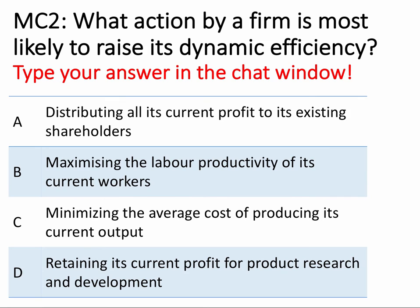Here's the second question: what action by a firm is most likely to raise its dynamic efficiency? The answer is D. Dynamic efficiency is linked to the pace of innovation in a market, meeting people's changing needs and wants over time. Therefore, a business which retains its current profit and plows it back into product research and development — for example, in pharmaceuticals or perhaps in an app, making money from an app and putting it into researching an even better app — that's going to lift dynamic efficiency in the market.